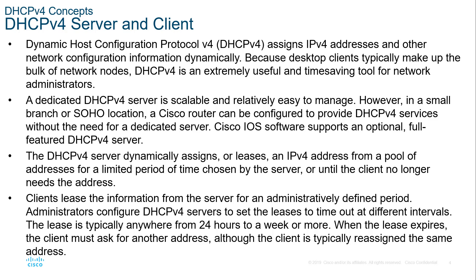A DHCP v4 server dynamically assigns or leases addresses from a pool for a selected amount of time. The lease duration needs to be fine-tuned to the organization; leases typically fall between 24 hours to a week. When the lease expires, the client must ask for another address or request to renew its current address.